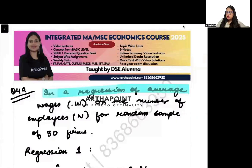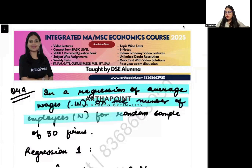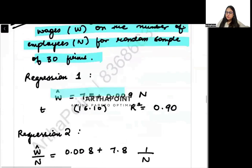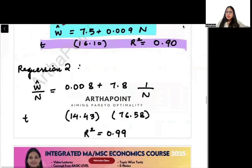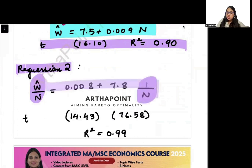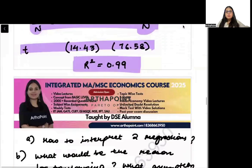This question involves a regression of average wages on the number of employees for 30 firms. You are given the first regression equation where W represents wage and N the number of employees, along with the t-value and R-squared. Then you are given Regression 2 where you have W by N and 1 by N in a regression model, with the t-value and R-squared.